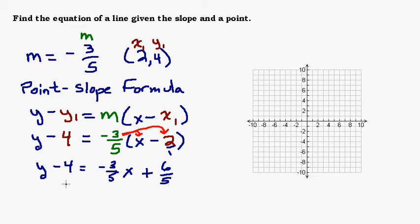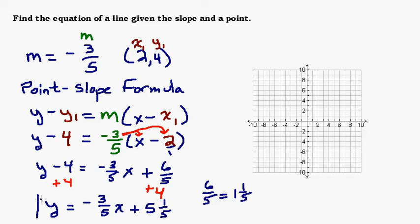So now to solve for y, we're just going to add 4 to both sides. And you could get a common denominator here, but really this is one you could do in your head by converting the 6 fifths to a mixed number. 6 fifths is the same as 1 and 1 fifth. So 1 and 1 fifth plus 4 would be 5 and 1 fifth. And that is the equation of your line.